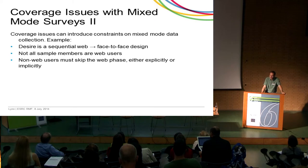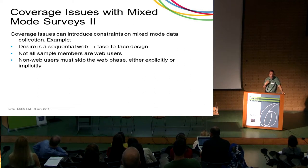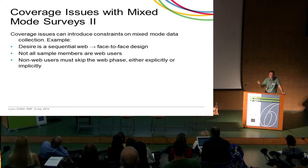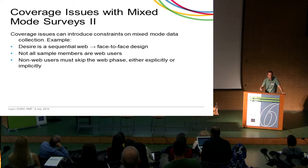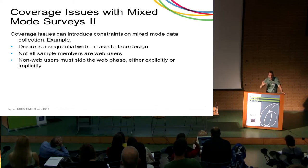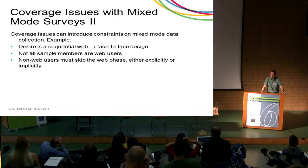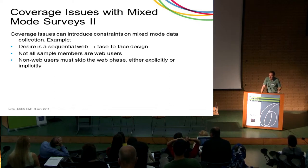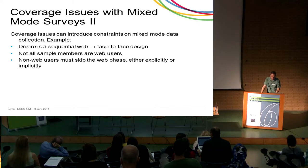On the other hand, coverage can also introduce constraints on mixed-mode designs. For example, in a sequential design trying to maximize response in a cheaper web mode before following up face-to-face, not all sample members are web users — this constrains the cost efficiencies achievable, because a whole group of sample members will never respond in the first mode. We could simply invite them to the web and accept that many won't respond, or we could try to identify who they are and avoid inviting them to the web.